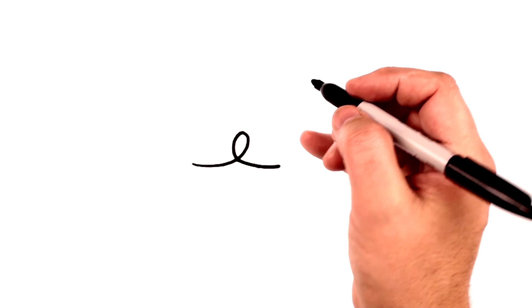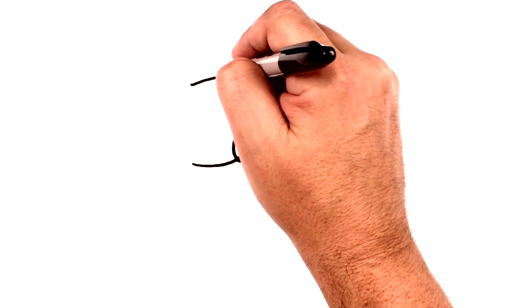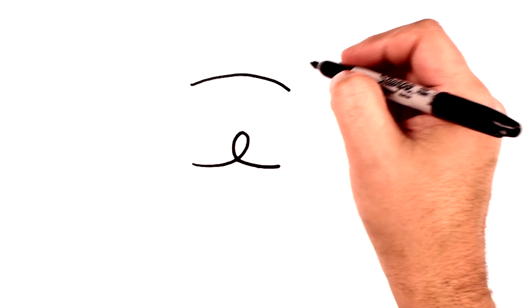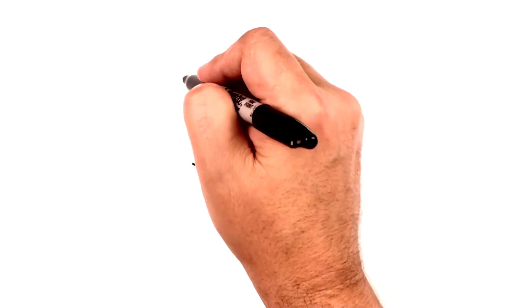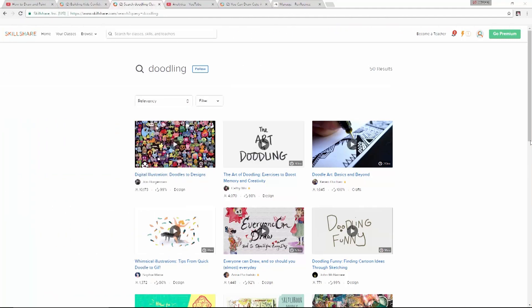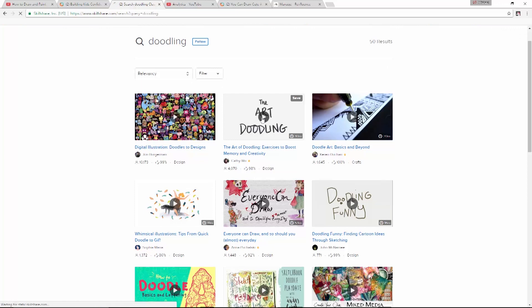Special thanks to Skillshare for sponsoring this video so I could show you some of the amazing things I'm learning. What I am showing you here is how to take a shape that seems kind of random and do something with it that is really a lot of fun. It's all part of a course on the art of doodling by Kathy Wu.